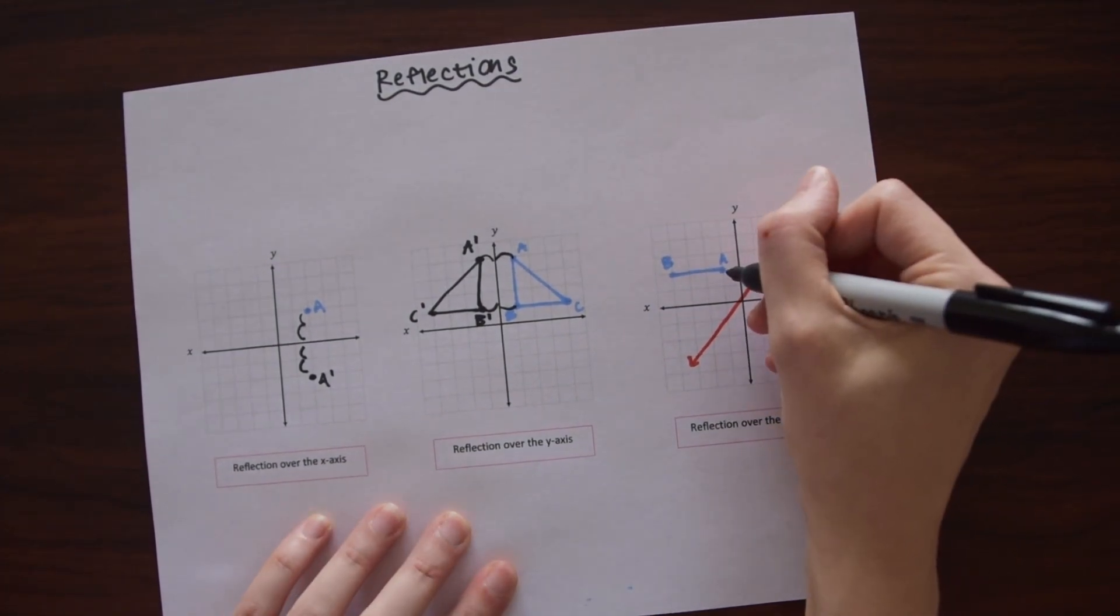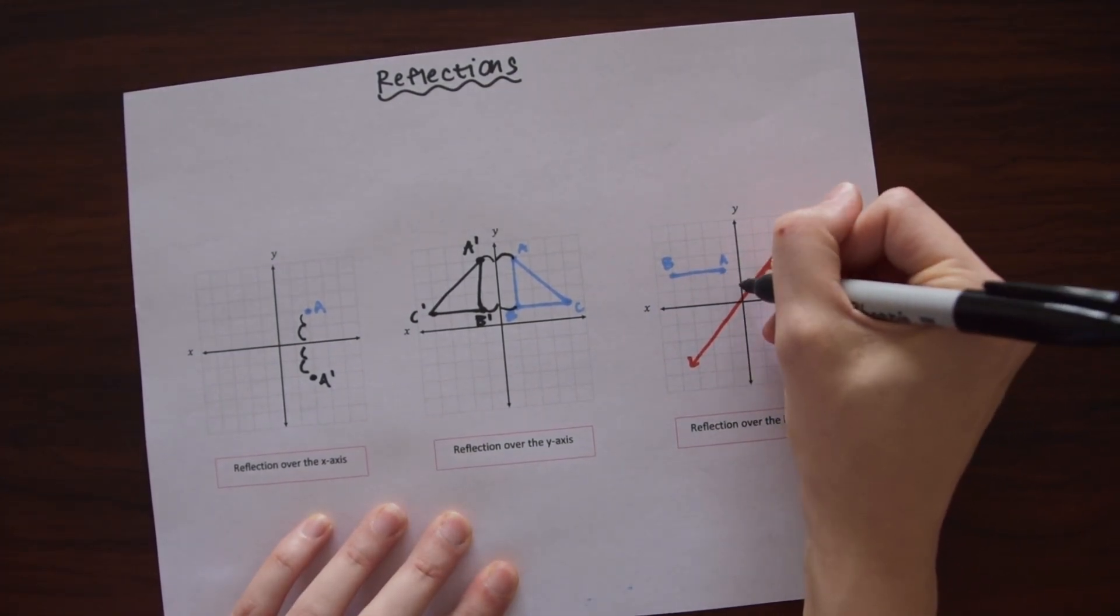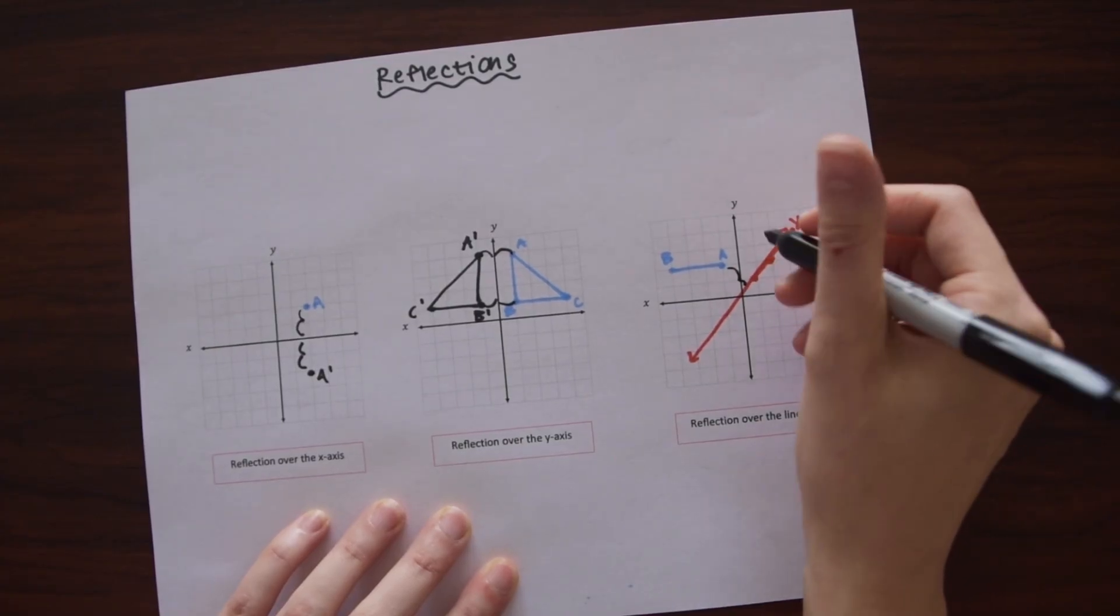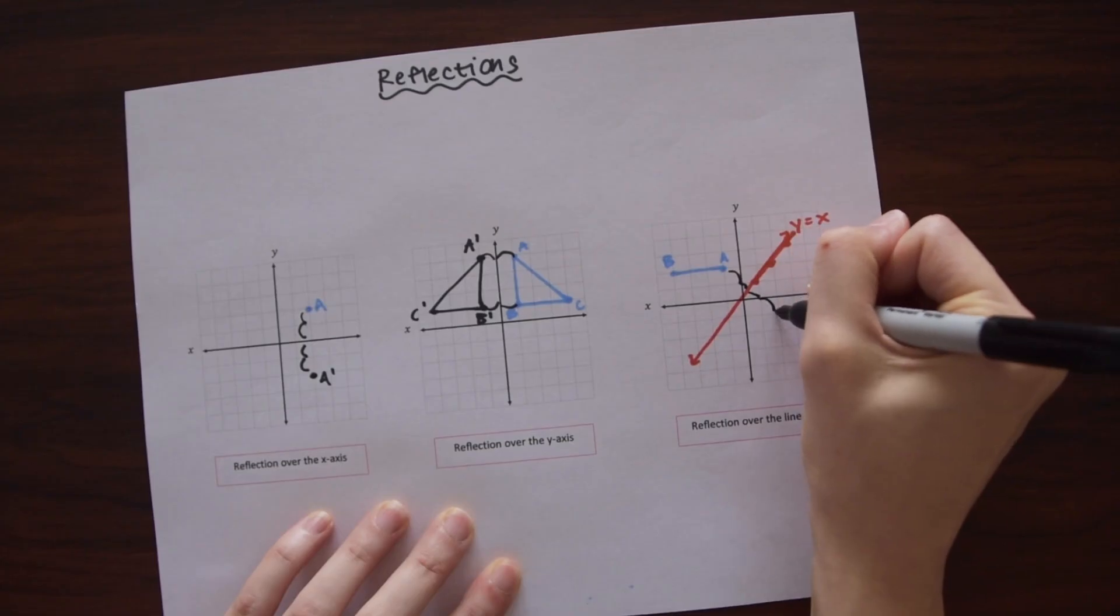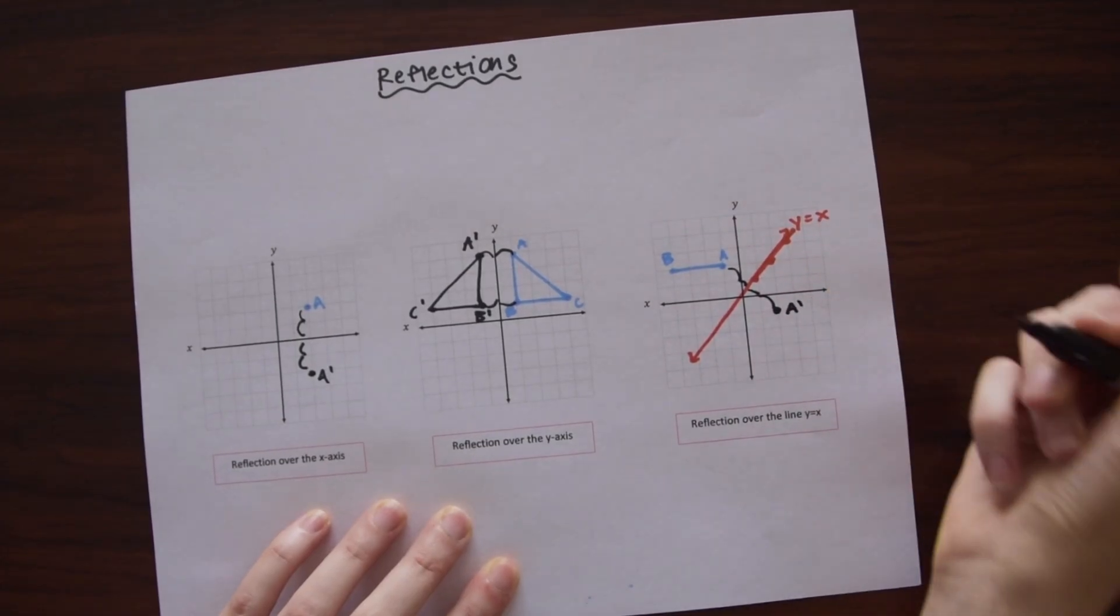We're going to do the same thing here, just counting the unit distance away from this line. Notice point A is kind of like a unit and a half away from the line Y equals X. So we're just going to go on the other side. So we have this little half and then a unit and then this is our new A prime.